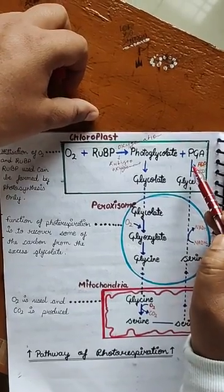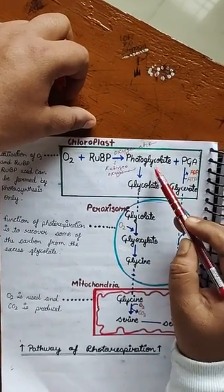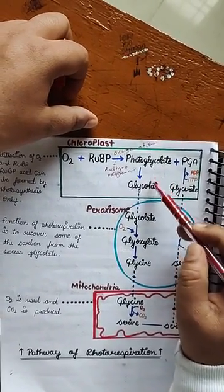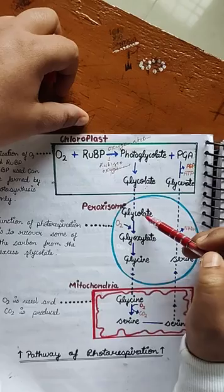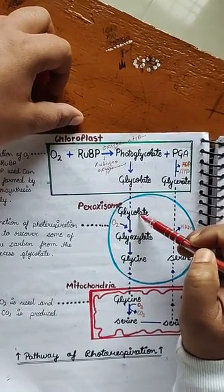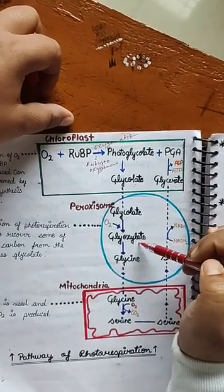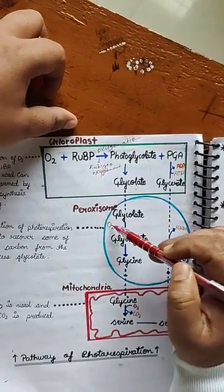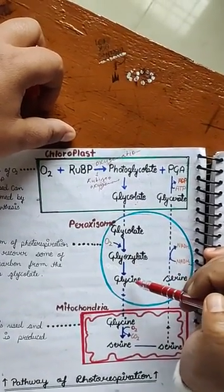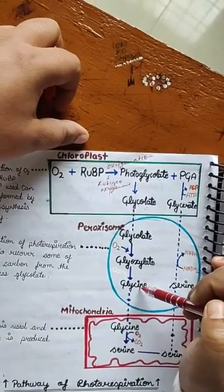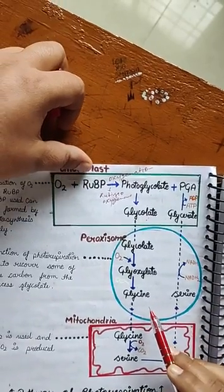ये जो compound है, इसके बाद glycolate में convert होगा। और glycolate enter कर जाएगा peroxisome में, जहाँ पर ये glycolate glyoxalate में convert हो जाएगा। इसमें oxygen यूज होगी, और ये glyoxalate next compound glycine में convert होगा।